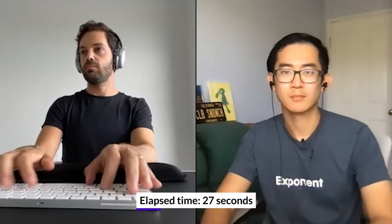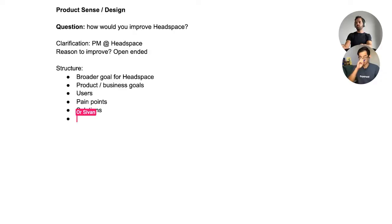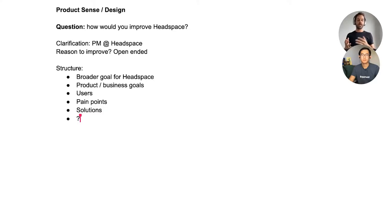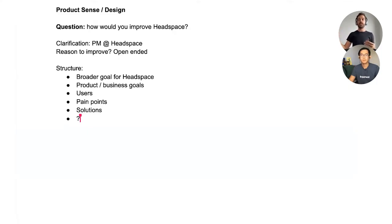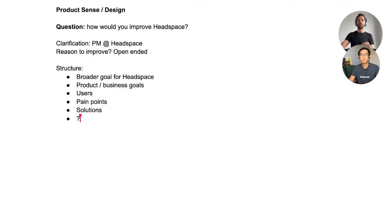I'm going to share my screen so you can get a sneak peek into how I'm thinking about it directly in the doc. So here's a quick TLDR on how I'm thinking to approach this question — let me know if you want me to add anything or deprioritize given time constraints. First, it makes sense as a PM at Headspace to think about the broader goal Headspace is trying to achieve. From that, think about a more specific goal to focus on when improving the app. Once we define that, think about the target audience, pick a specific niche, think about their pain points, and finally come up with creative solutions. Does that sound good?